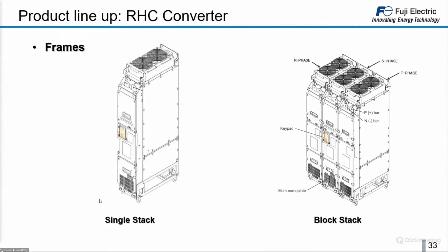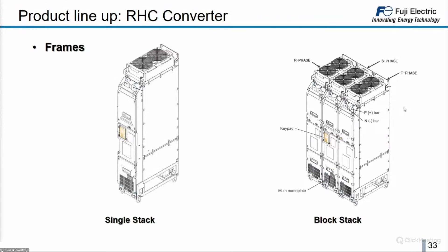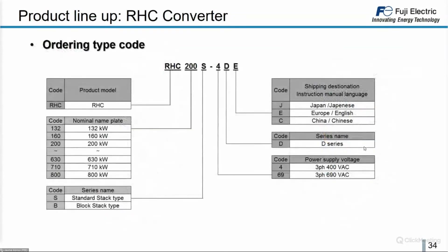There are two main frame configurations. A single stack is one module where three-phase inputs L1, L2, L3 connect at the bottom and the DC positive and negative are available at the output. A blocker stack is a reference containing three stacks — one per phase (L1, L2, L3) — that together take the three phases from the mains and generate the DC link. With one type code you receive all three modules plus the cables to connect them; the middle L2 module is the master module containing the control board and keypad.